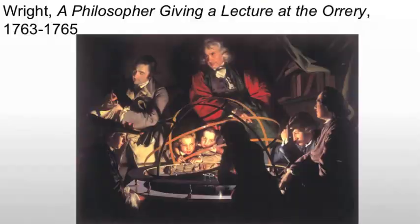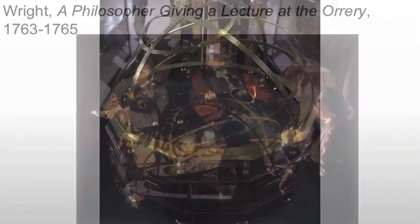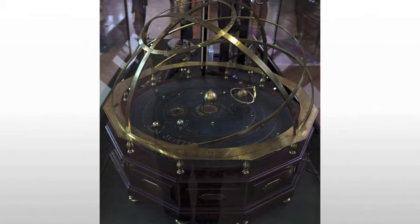An orrery, as we see here, is a model of the solar system, incorporating the correct relative velocities and a light to represent the sun.